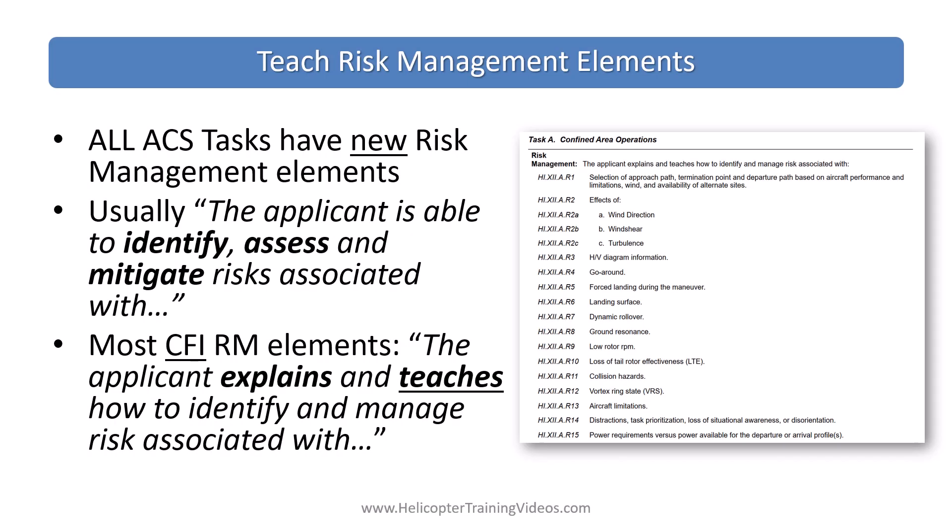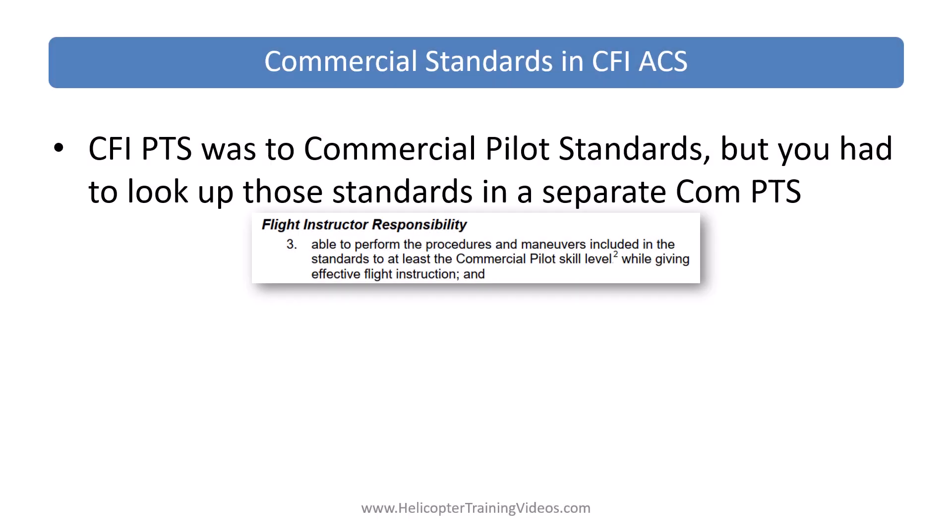Risk management elements are new to all the ACS. All tasks now have a risk management section. In the private, commercial, and instrument ACS they usually start with 'the applicant is able to identify, assess and mitigate risks associated with' and then give a list of risk elements. For the CFI rating, you're going to have to teach one or more of those elements in each task, so the wording now is 'the applicant explains and teaches how to identify and manage risks associated with.' In the past you didn't have these risk elements identified, and you didn't have to actually teach them — but now you need to know these risk elements well enough to teach any of them.